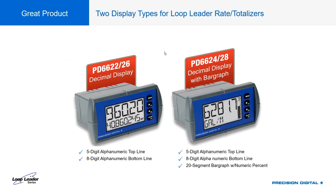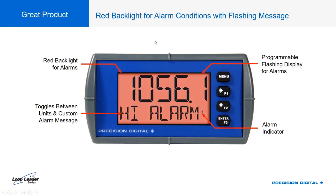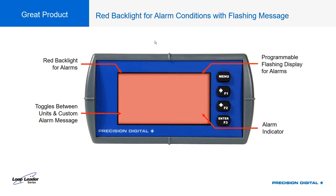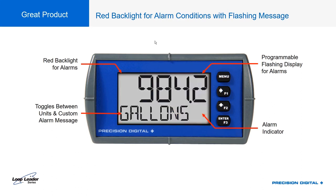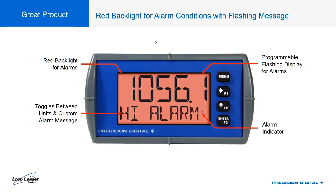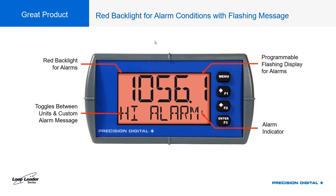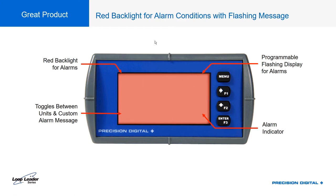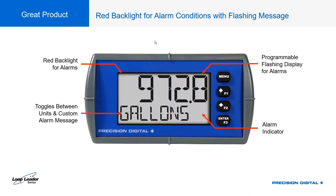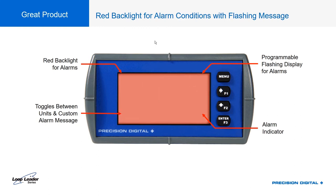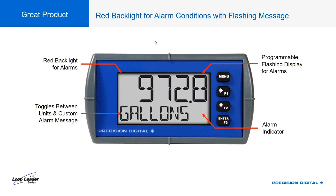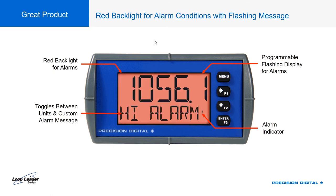Other display features include four ways to indicate an alarm state. Most visually striking: when you reach an alarm threshold — say, over a thousand gallons — the backlight turns red, which is visible from far away. The display can also flash and toggle between the units label and a custom alarm message, such as 'High Alarm,' or an action to take, or the ID of a particular tank or transmitter. A small alarm indicator in the lower right also provides a subtle notification.